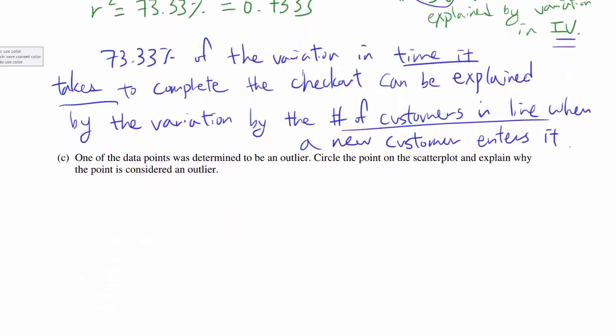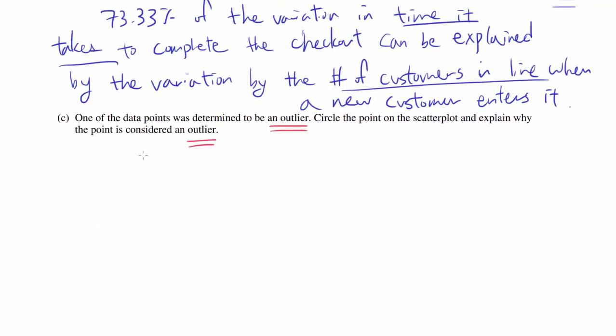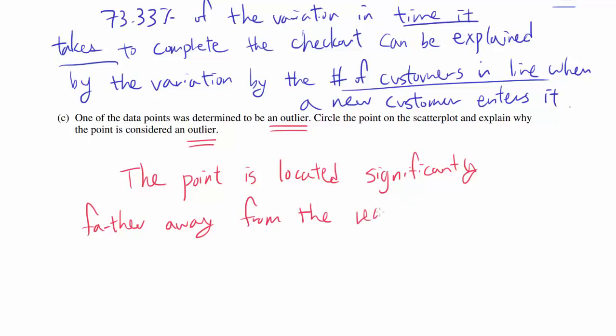Let's go on to part C. One of the data points was determined to be an outlier. Circle the point on the scatterplot and explain why this point is considered an outlier. So we want to find a point that's located farther away from the regression line compared to the other points, and it's pretty easy to see that that's this point at around 3,100. We know this point is an outlier because the point is located significantly farther away from the regression line compared to the other points. And that concludes our first question.